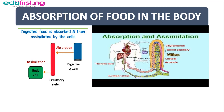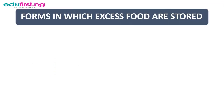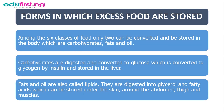The end products of digestion are mainly glucose, fatty acids, glycerol, and amino acids. Among the six classes of food we have, only two can be converted and stored in the body; the rest, once they are in excess, are taken out of the body. These two classes of food are carbohydrates, which are converted to glucose, which is then converted to glycogen by insulin and stored in the liver. And we have fats and oils, which are called lipids. These are digested into glycerol and fatty acids, which can be stored underneath the skin, around the abdomen, the thigh, and muscles.